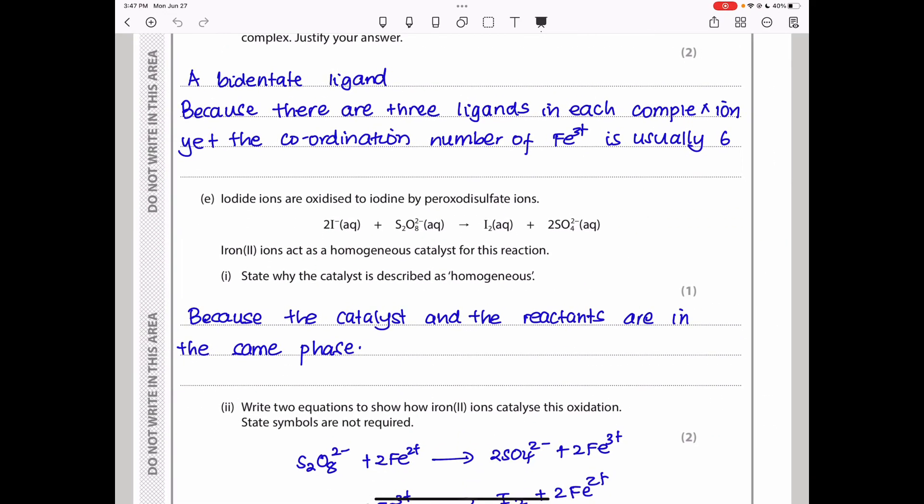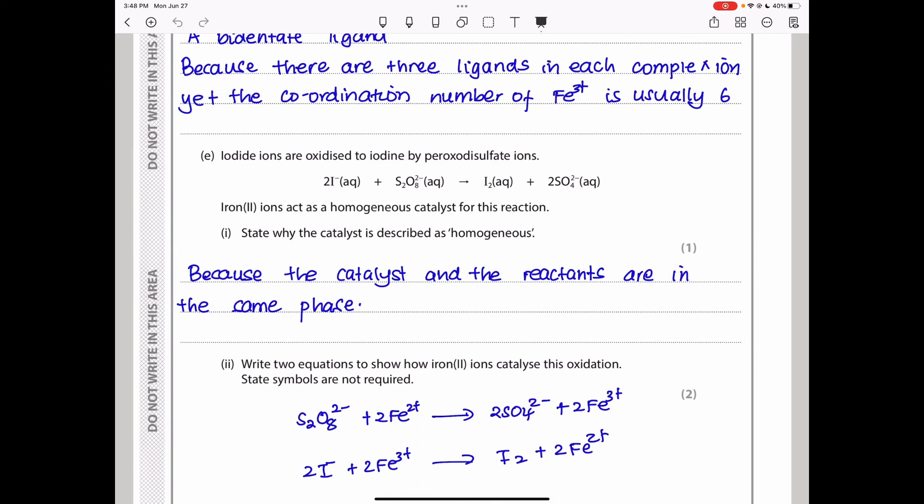The next question says: iodide ions are oxidized to iodine by peroxydisulfate ions. This is the equation for the reaction. Fe2+ ions act as homogeneous catalysts for this reaction. They say: state why the catalyst is described as homogeneous. It is homogeneous because everything is aqueous. They are all in aqueous states. I say: because the catalyst and the reactants are in the same phase or same state of matter, we can say that the catalyst is homogeneous.